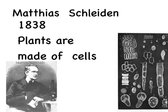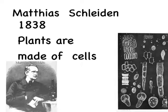Along came two scientists who both made important discoveries. The first was called Schleiden. Schleiden was a botanist. He looked at all sorts of plant cells, and when he looked at all of these different plant cells, he realized that all of the plants seemed to be made out of cells.